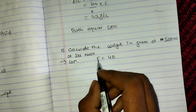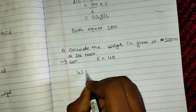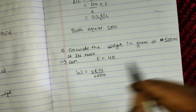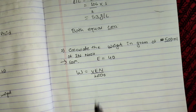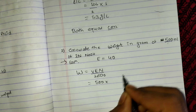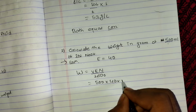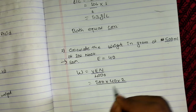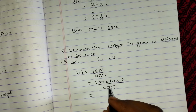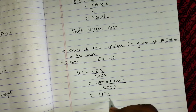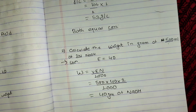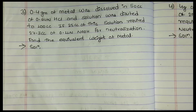Using W = (V × E × N) / 1000, with volume = 500 ml, equivalent weight = 63, and normality = 2, we calculate: W = (500 × 63 × 2) / 1000 = 63 grams. So 40 grams — wait, the answer is 63 grams of HNO₃.